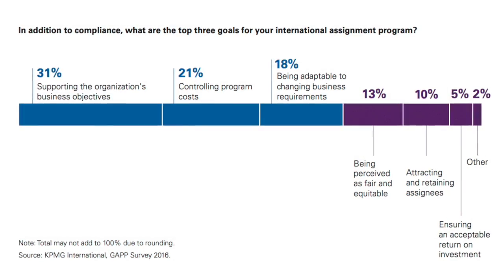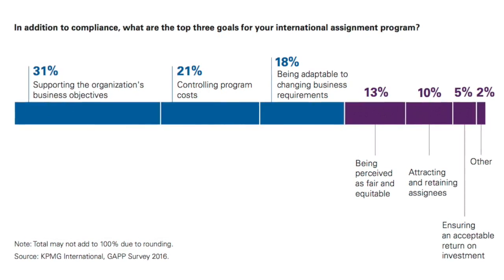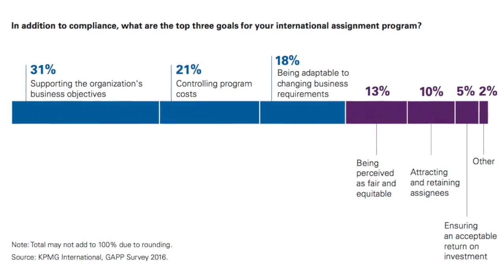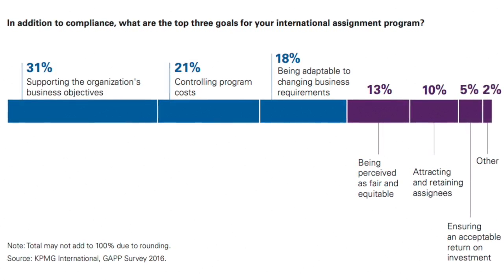About half of the survey respondents indicated that the primary objective of their mobility program was to support the broader business objectives of the organization. They also largely indicated that managing the cost of the global mobility program was a very high priority. In terms of policy trends, long-term assignment policies are still the main policies utilized by organizations, followed by short-term assignment policies.